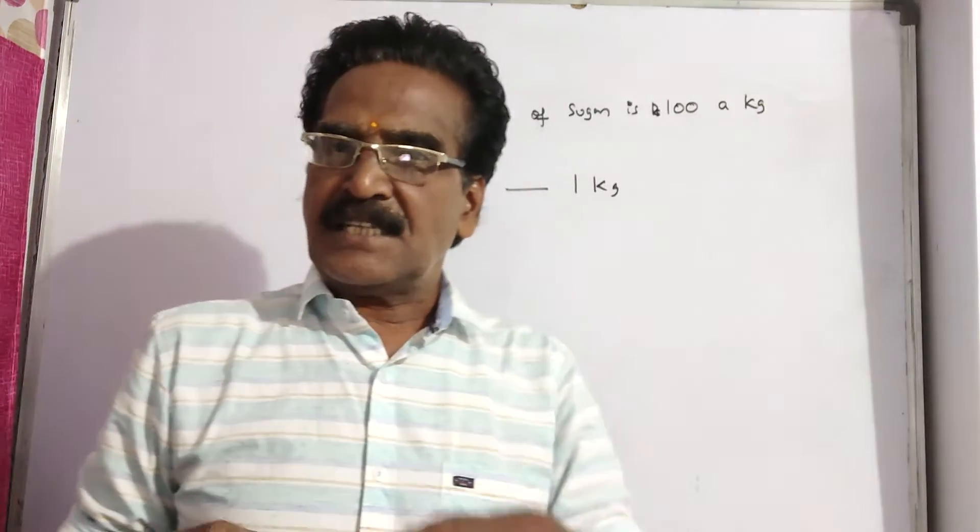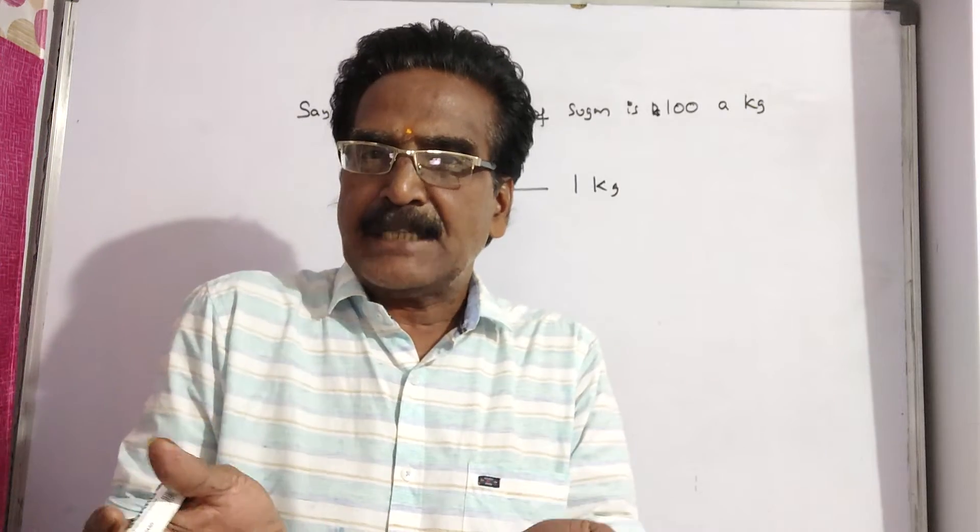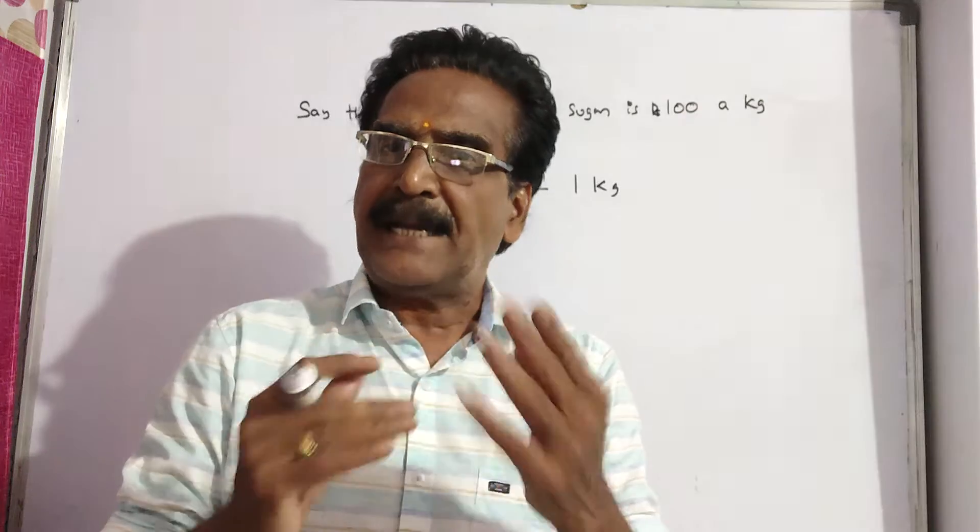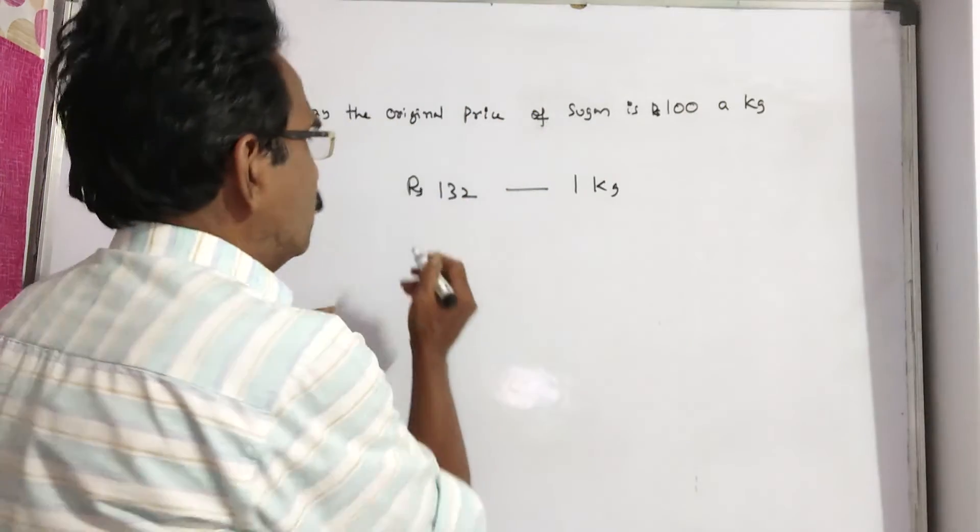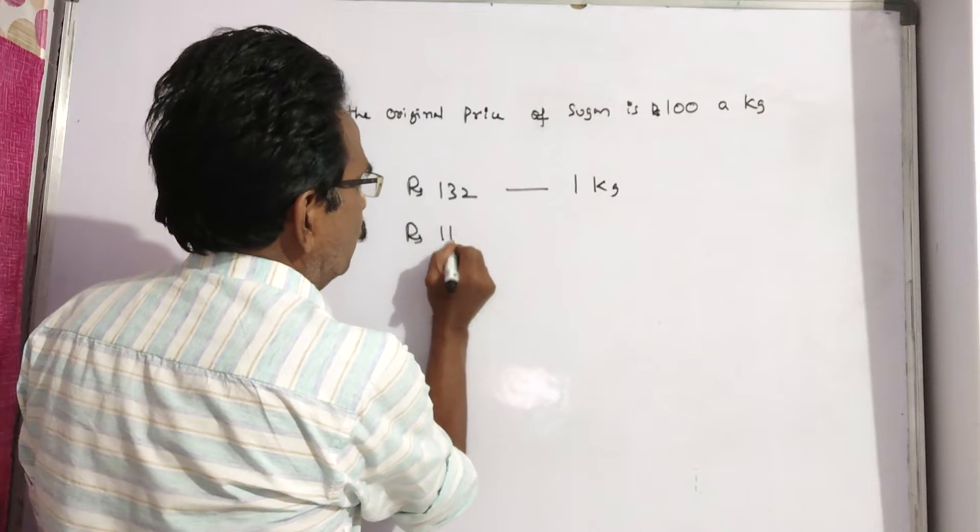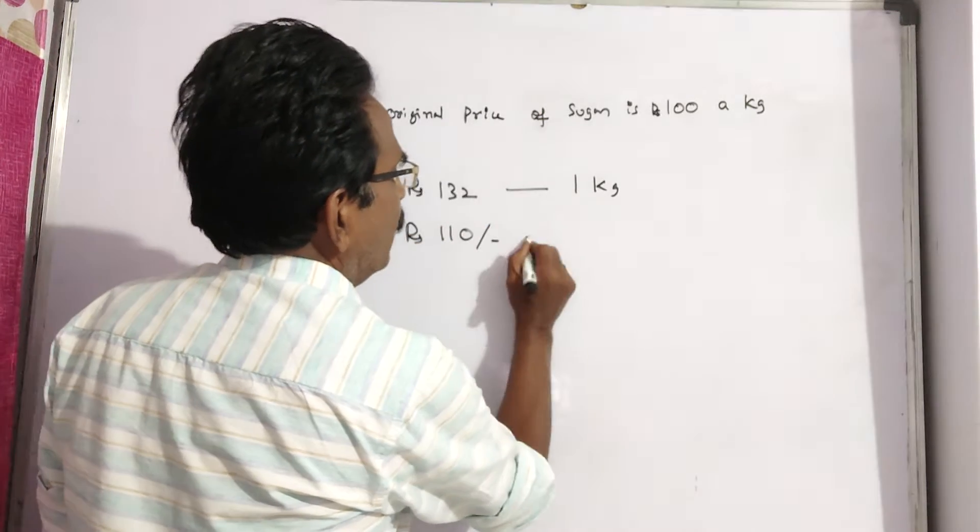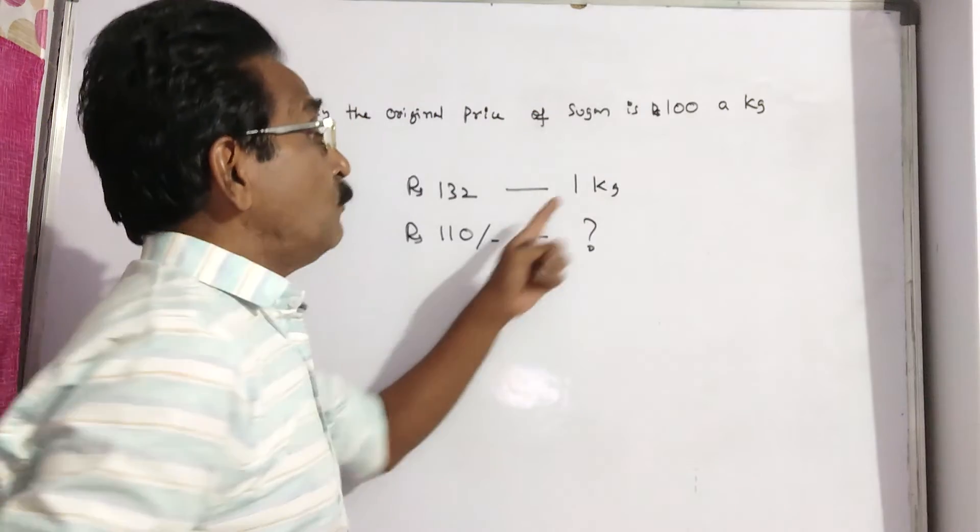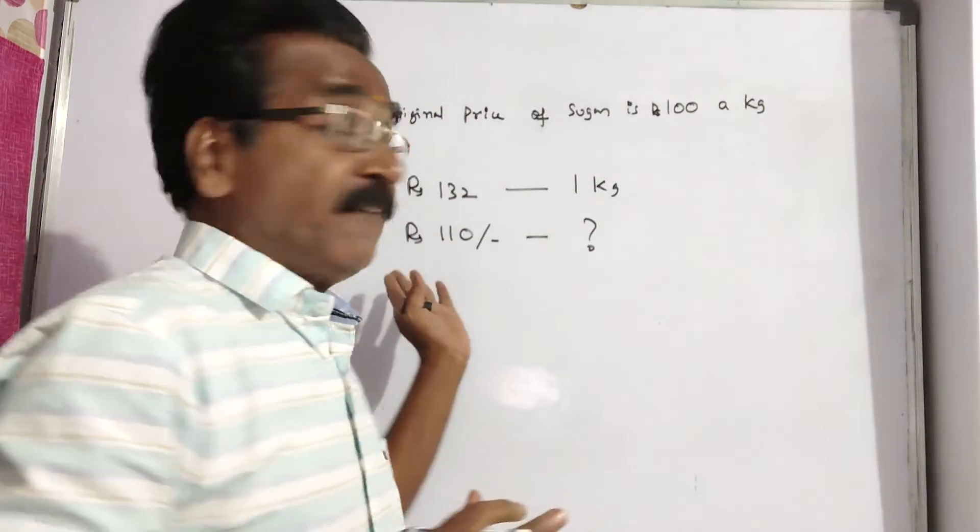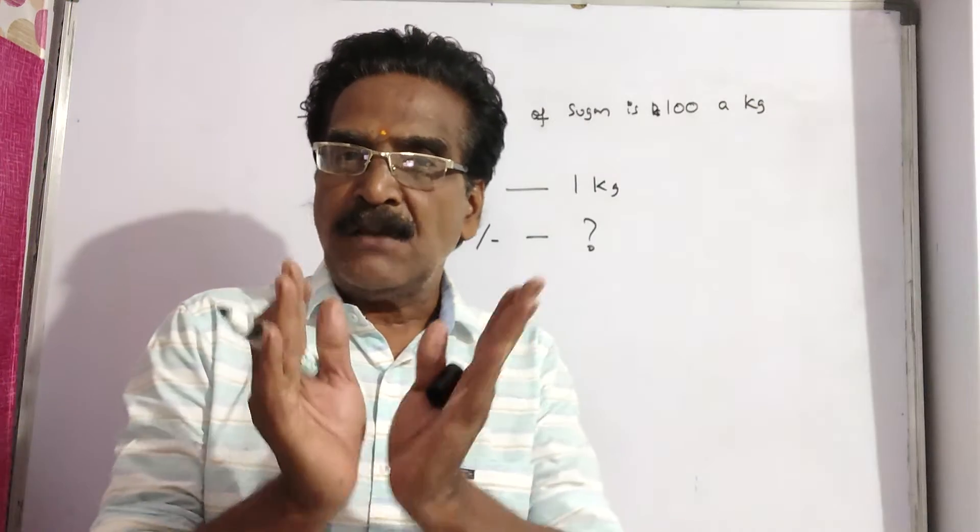The family reduces the consumption so that the expenditure is increased by only 10 percent. That is they want to spend 10 percent extra. So they want to spend rupees 110 on sugar. Now the sugar price is 132 rupees per kg, but the family wants to spend only 110 rupees.